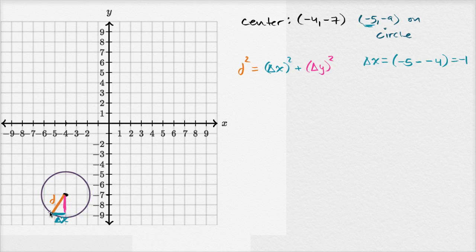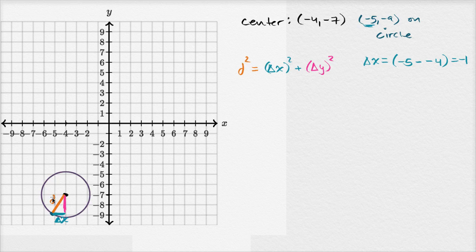So when you go from the center to this outer point negative five comma negative nine, you go one back in the x direction. Now the actual distance would just be the absolute value of that, but it doesn't matter that this is a negative because we're about to square it and the negative sign will go away.